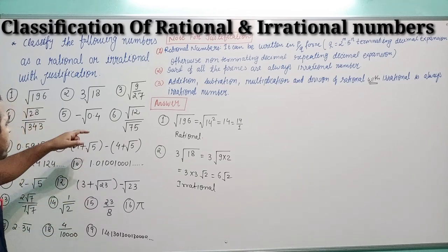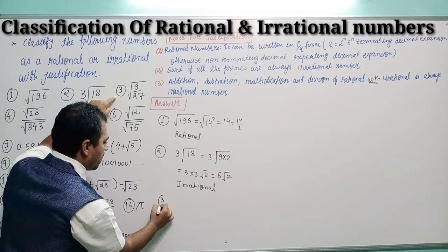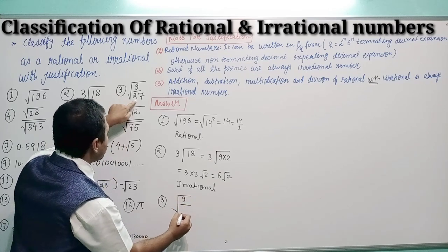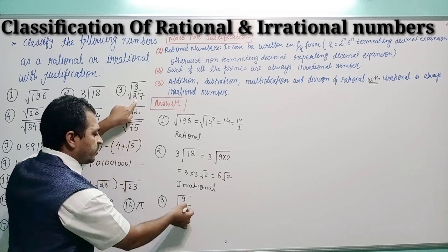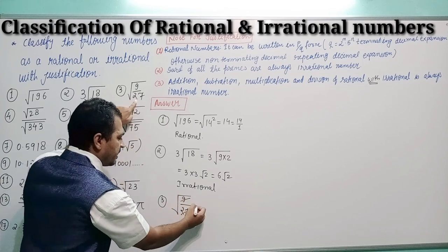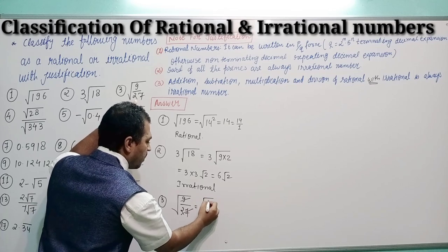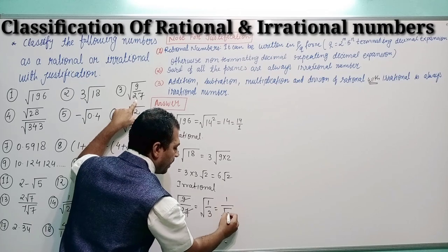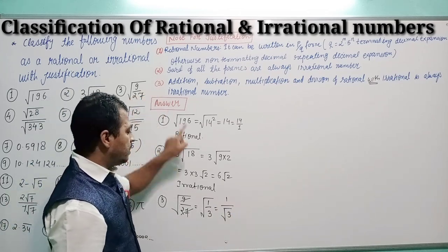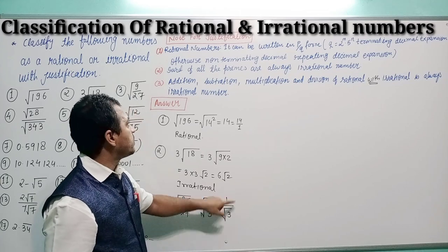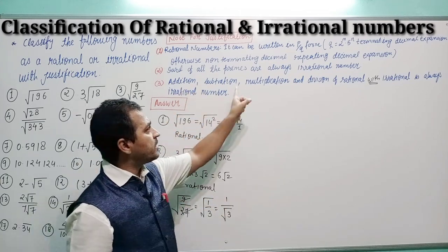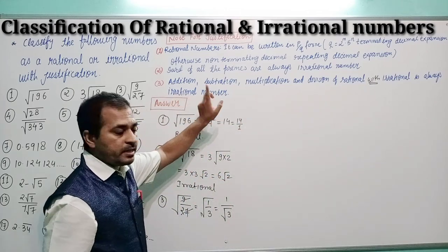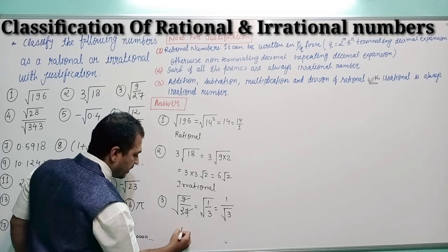Third question: √(9/27). By cancelling, we get 1/3, so we have 1/√3. Applying the third point again: 1 is rational and √3 is irrational. Division of a rational number with an irrational number is always irrational. So this is irrational.